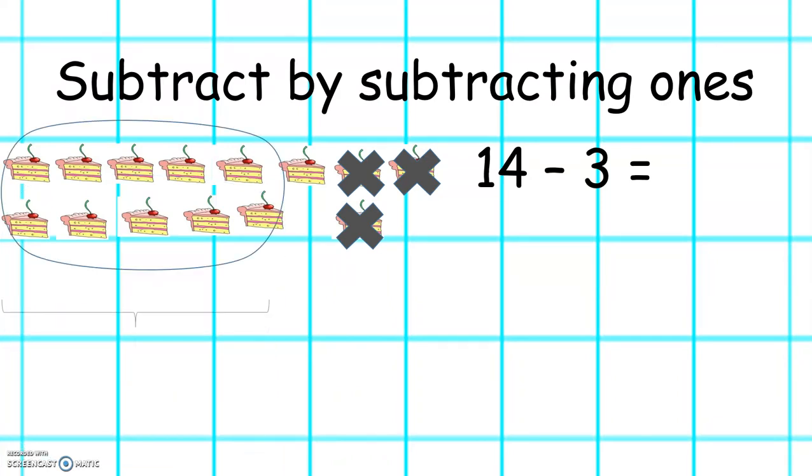So to find out how many we have left, let's make 10 and 1. So counting all together, 10, 11. So 14 take away 3 equals 11.